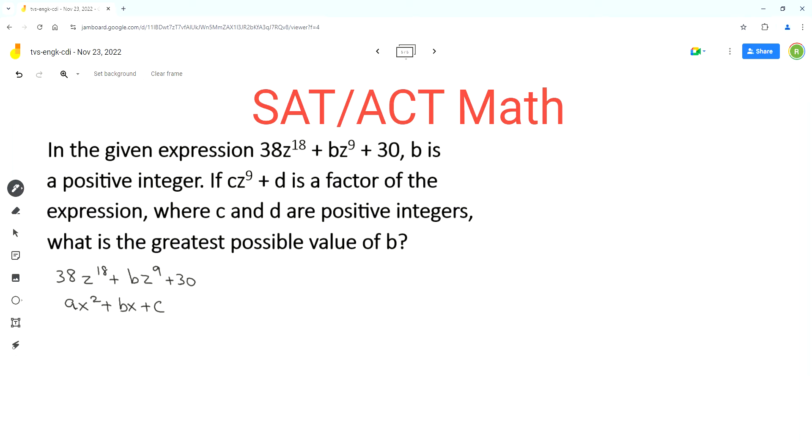That means we can factor the given expression using complex trinomial factoring. We can use the decomposition method. As per this method, we have to find two numbers whose sum is b, the coefficient of the middle term, and whose product is 38 times 30, which is equal to 1140.